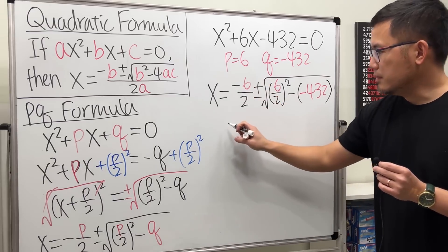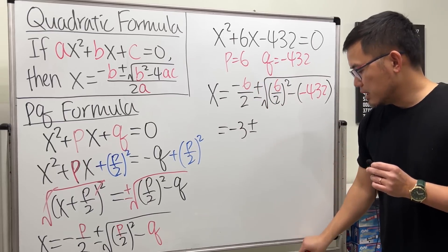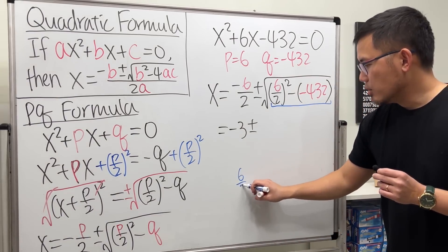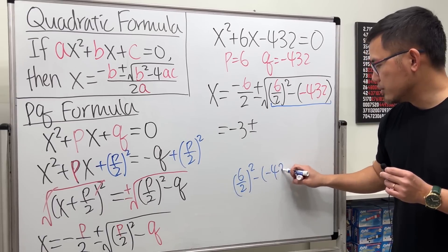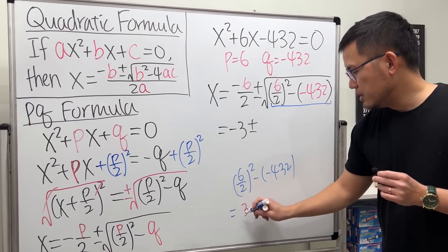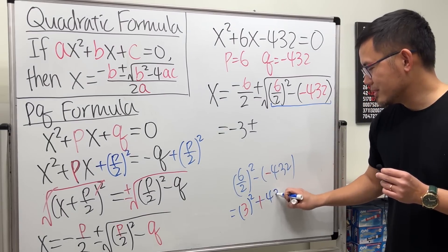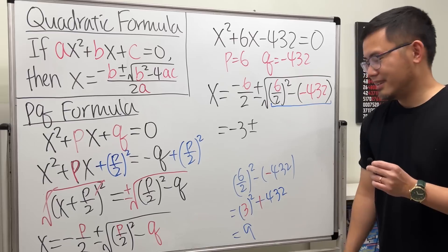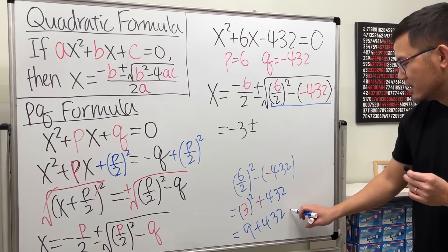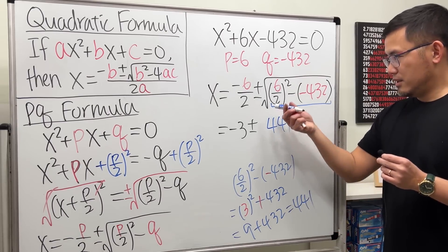Now, we just have to work this out. Here, negative 6 over 2 is just negative 3, and then we have the plus or minus. And, for the inside, 6 over 2 squared minus negative 432. This right here is 3. So, this is 3 squared and then minus minus becomes a plus 432. This right here is equal to 9. And then this right here is equal to 432. If you add, altogether, you get 441.